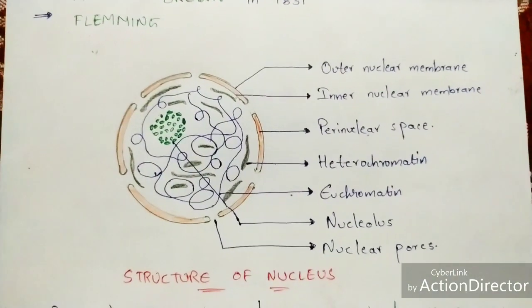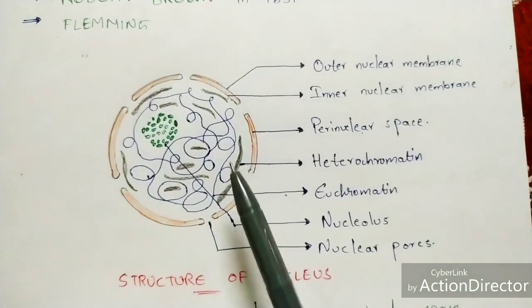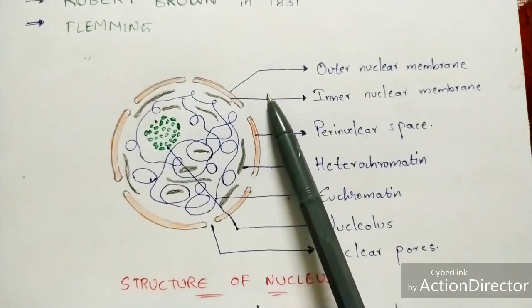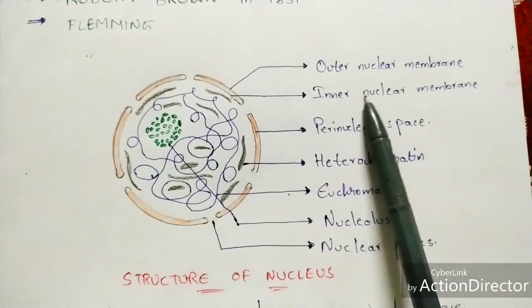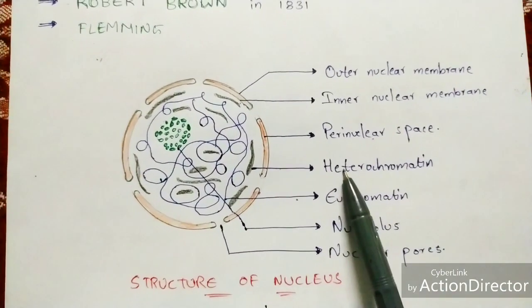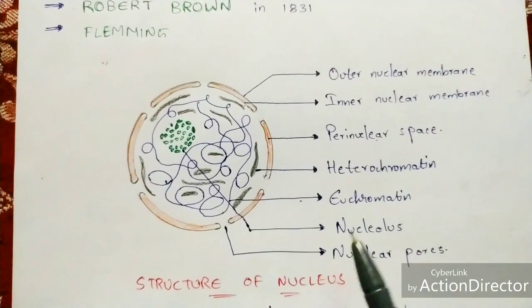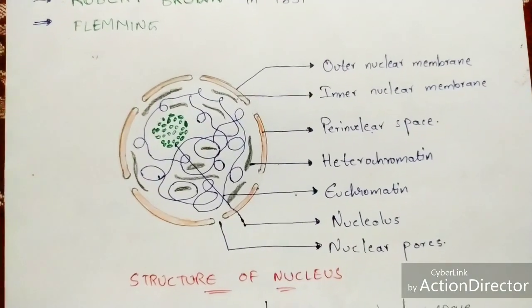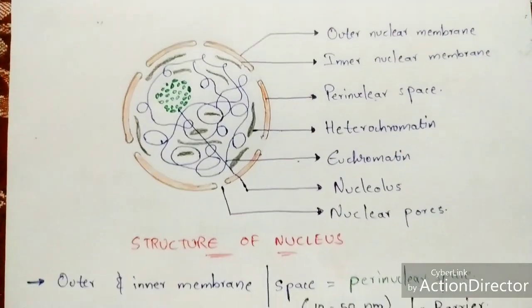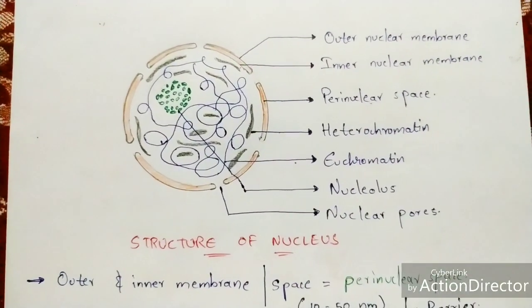The structure of the nucleus was given by Fleming. The parts present in the structure of the nucleus are: outer membrane, inner membrane, perinuclear space, heterochromatin, euchromatin, nucleolus, and nuclear pores. In this video, I am going to explain all of these parts in detail.